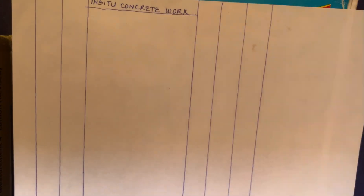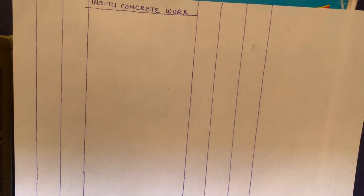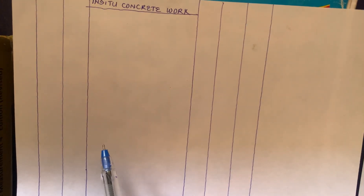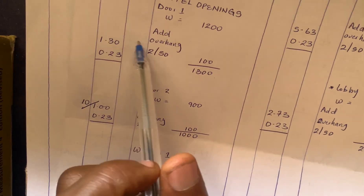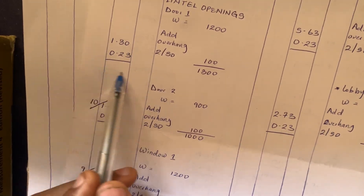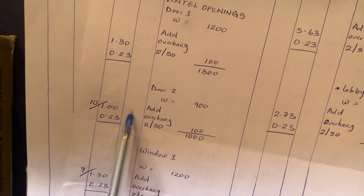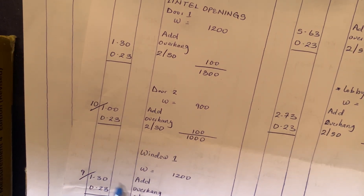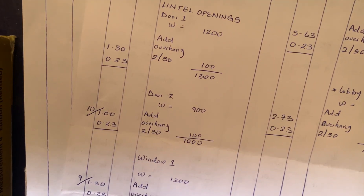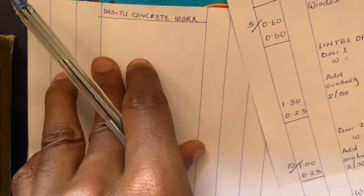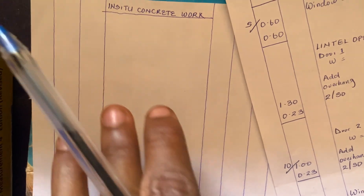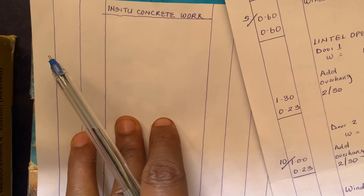So we're going to be calculating for this reinforced concrete. When you want to calculate for the concrete for the lintels, all you need to do is go back to your previous calculation on the lintel openings. This is a copy of what we did before — 'lintel openings' — and all you need to do is transfer all the measurements you've recorded on the lintel openings into the in-situ concrete work document.